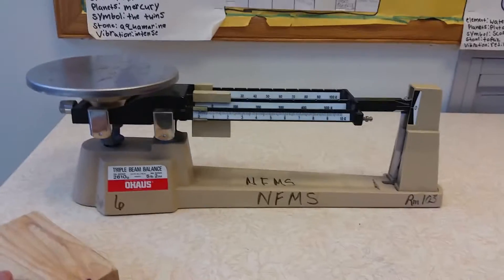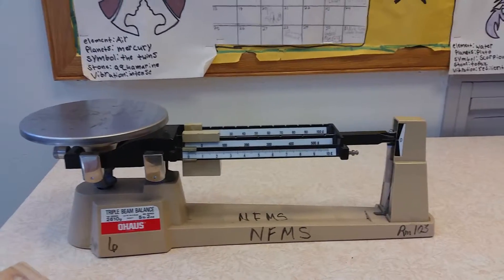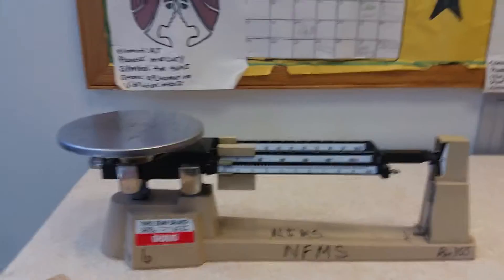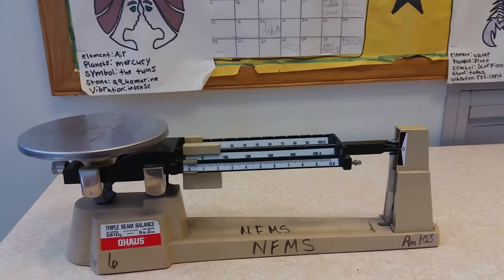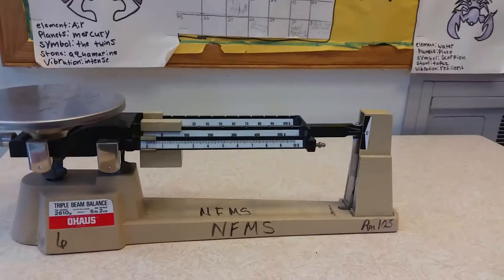Today, I will show you how to use the triple beam balance. A triple beam balance measures the mass of an object. Mass is the amount of matter in an object. The object is measured in grams.